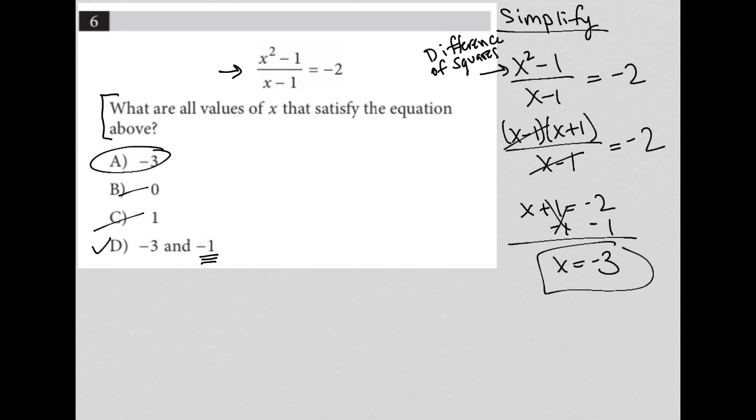So one way I can do that is by using another strategy called plug-in answers. So again, I go back and say, well, if I started out with x squared minus 1—oops, not x squared minus x—it's just x squared minus 1 over x minus 1 equals negative 2.